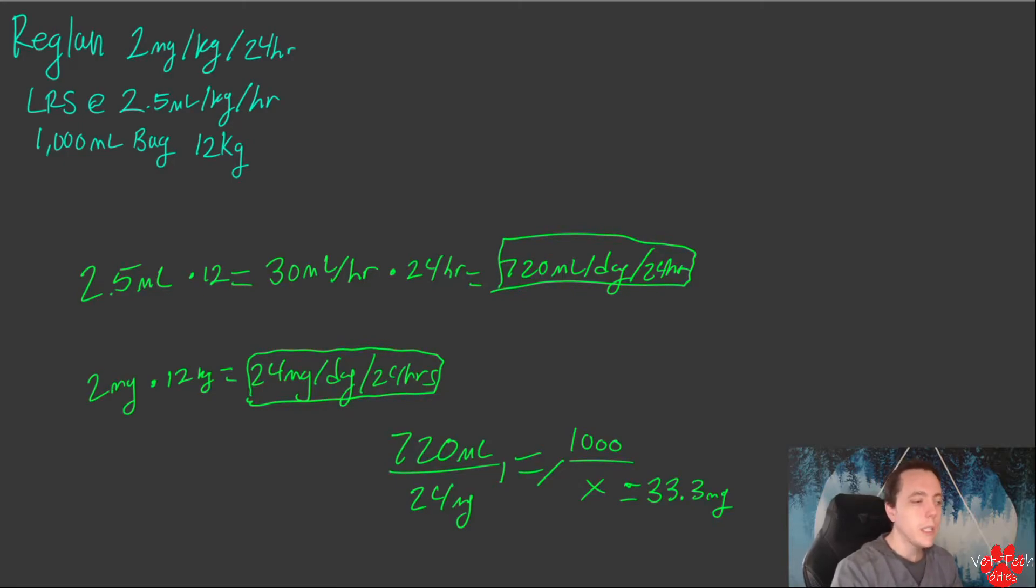None of the math is really difficult. It's just a few things you have to keep track of. Once you get the steps down and focus on figuring out how much they need of both things per day, create a proportion or equal ratio, and find your one variable—the amount of drug to add. It's the same setup every time. Let's try one that's a bit more complex.